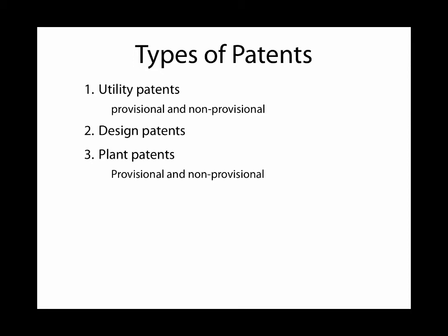There are three types of patents: utility patents, design patents, and plant patents. We will focus on utility patents because those are used to protect inventions. Utility patents come in two types — provisional and non-provisional — which we'll talk about. Plant patents also are provisional and non-provisional.